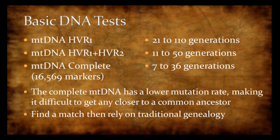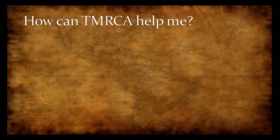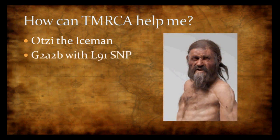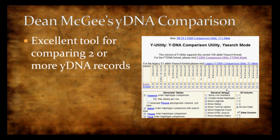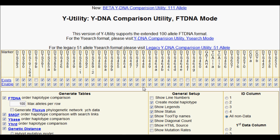A match is a match — find a match and then rely on traditional genealogy to get yourself closer. Recently, Otzi the Iceman's haplogroup was announced as G2A2B with an L91 SNP mutation. I'm a G2A3B, so this was exciting — it makes Otzi and me first cousins X number of times removed on the haplogroup G family tree. I grabbed my own Y-DNA test and a good example of G2A2B with the L91 SNP to use in Dean McGee's Y-DNA comparison utility.